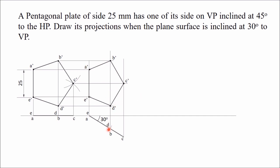Now the plane is inclined at 30 degrees from VP, and the side A-dash E-dash is perpendicular to the XY line. It is given that this side should be inclined at 45 degrees to the HP. So we will make A-dash E-dash inclined at 45 degrees from the XY line. Draw a line at an inclination of 45 degrees, mark E-dash anywhere on this line, then measure the length E-dash to A-dash and mark point A-dash. Once you have A-dash E-dash, you need to reproduce the entire pentagon at this 45 degree inclination.